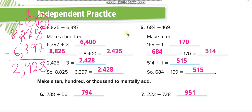Similarly, we can subtract 684 minus 169 using the same method. Or if we add 1 to 169, it becomes 170. Then subtract 170 from 684, which gives 514. And since we subtracted one more than we needed, we add 1 back to the answer, giving us 515.